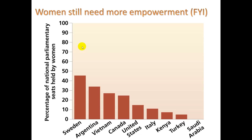A little FYI here — how many of our governors are women? So if you take a look at percentage of national parliamentary seats held by women, it's pretty low. Sweden is the highest at 45%, Argentina pretty high. Vietnam, Canada, U.S. around 15%. But many countries have no representation by women, like Saudi Arabia.